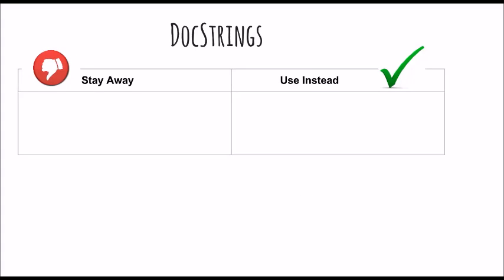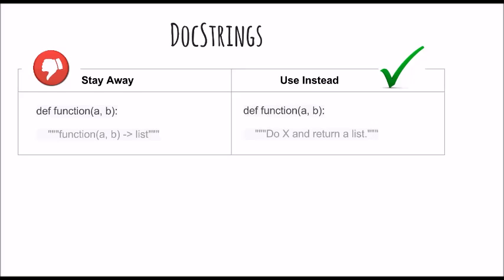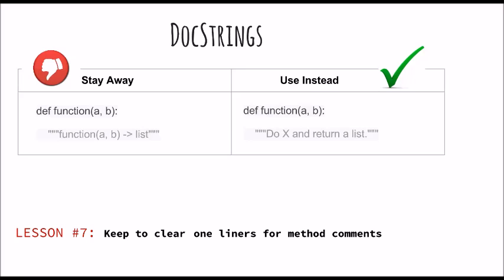The next part of docstrings deals with one-liners for code commenting. Instead of just writing 'function(a, b) — gives list', you should write 'do something and return a list'. Triple quotes are used even though the string fits in one line — this makes it easier to expand the comment later. The docstring is a phrase ending in a period; it prescribes the function or method's effect as 'do this, return that', not as a description. Lesson number seven: keep to one-liners for method comments that are short and crisp.